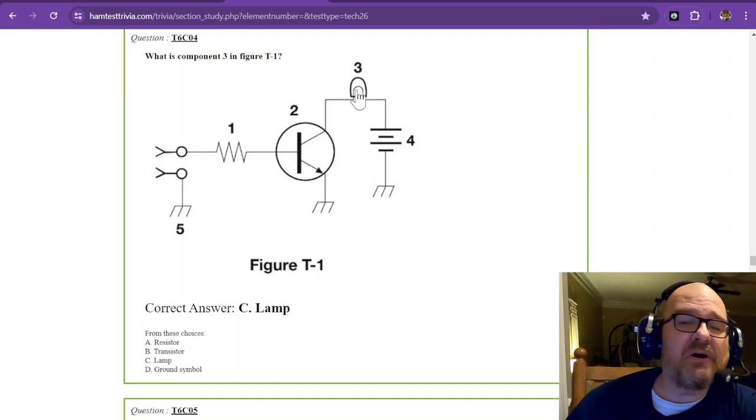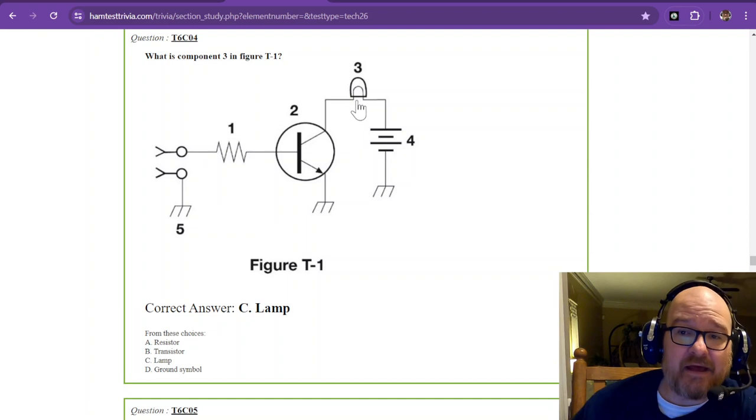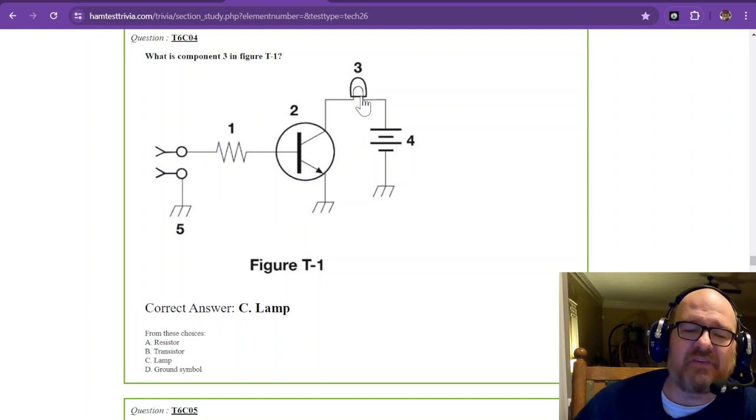Now, most modern electronics are using diodes these days, known as light-emitting diodes, but occasionally you'll see some of the older stuff uses a lamp.